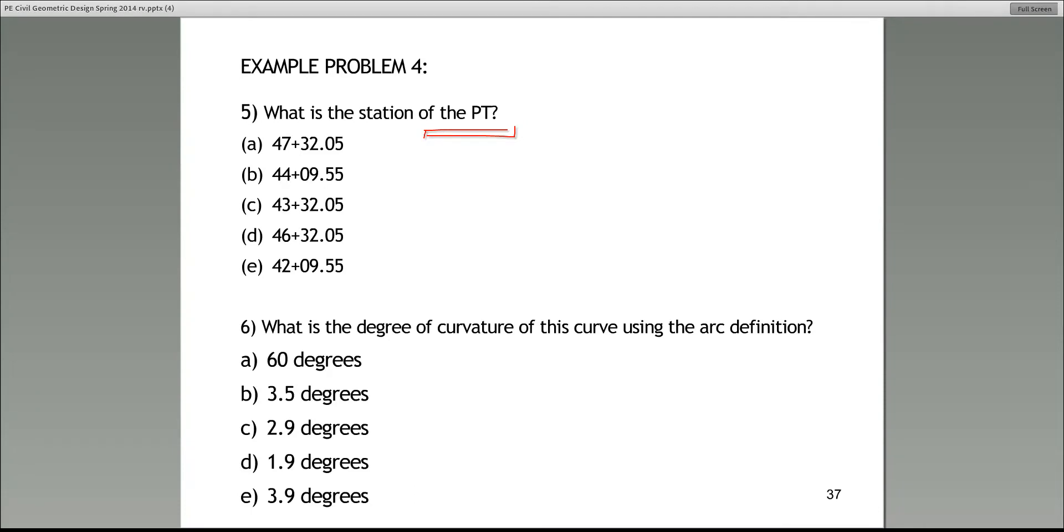Min On already gave me an answer, and I believe it's correct. We'll wait for a couple of other choices. 44.95, this should be the station of the PT. Remember, the only correct way, take the station of the PC and add to it the length of the curve. Make sure you do that correctly. Very good chance that will be on the test.